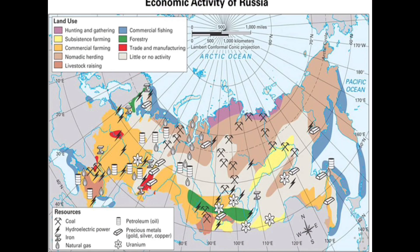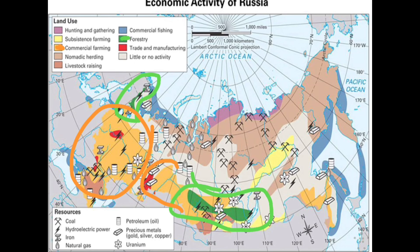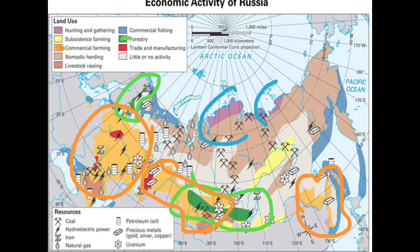Number two: soil and forest land. Looking at the economic activity map, you don't really have a lot of commercial farming or forestry. There are small pockets of forestry in a couple of areas and a little commercial farming in the warmer areas and a bit in Asia. But overall, only 10% of the land can support commercial farming and forestry, largely because it's just way too cold in most of this area.